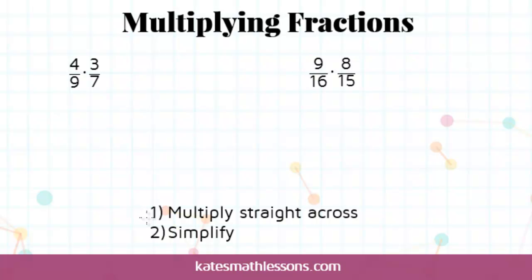When you're multiplying fractions, you're going to multiply straight across. That means you're going to multiply the numerators together, the top numbers, and multiply the denominators together, the bottom numbers.